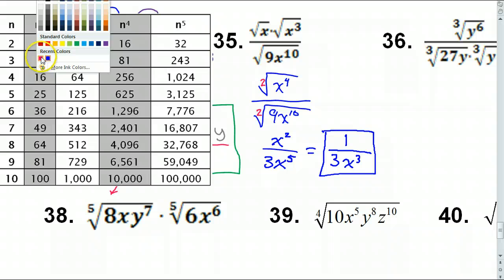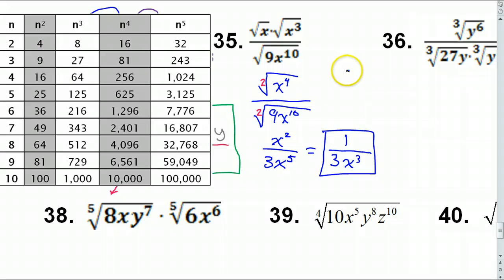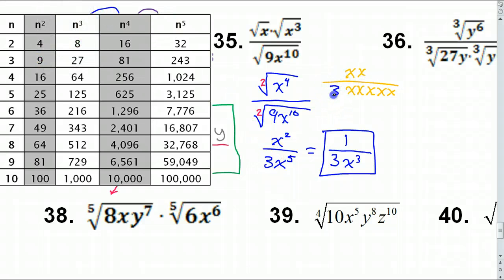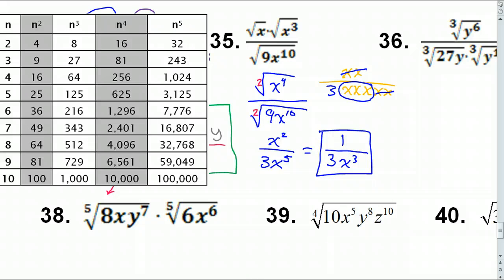To clarify: X squared over X to the 5th. X squared is X times X; X to the fifth is X times X times X times X times X, with 3 sitting there. The two X's cancel two of the five X's, leaving three X's — that's why we have X cubed on the bottom with the 3.